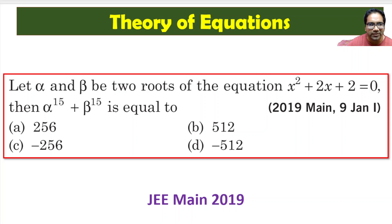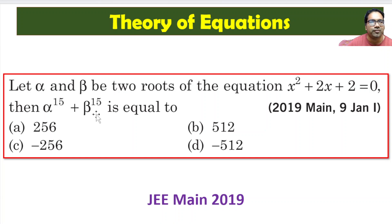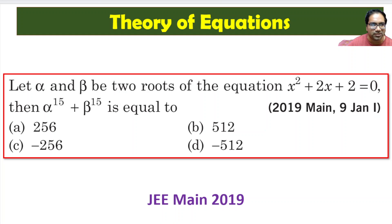Hi friends, here we are given this quadratic equation x² + 2x + 2 = 0, and alpha and beta are roots of this equation. Clearly the roots are complex when b² - 4ac is negative. b² is 4 minus 8, which is negative. So the roots are complex. The question is about alpha power 15 plus beta power 15 — basically it is just simplification of two complex numbers. Let us see how we can do this.